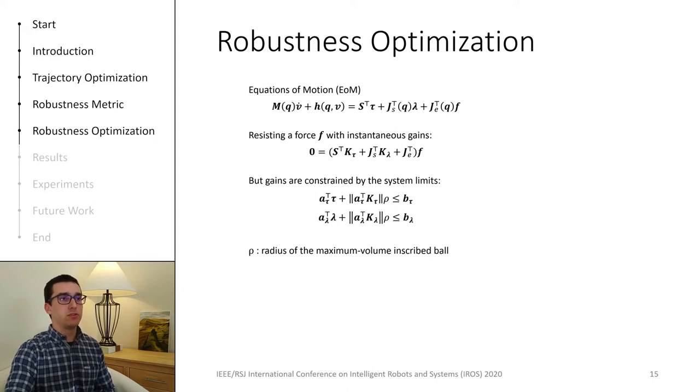Our proposed approach involves considering a virtual force that is applied to the robot. We denoted it here with F. We also consider two instantaneous gain matrices, kTau and kLambda, which map the torques and the contact forces required to resist that force. As we can see from the second equality in this slide, the matrices kTau and kLambda should cancel out the force F.